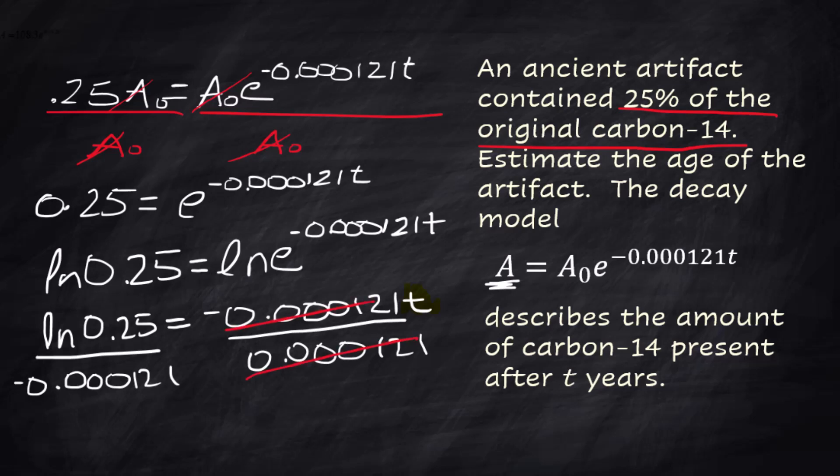And you're going to grab a calculator and you're going to punch in the natural log of 0.25 and you're going to divide it by that number. The solution was that t is 11,456.98. All right so this thing we found, you come up with a story, it's a little thing you found in your backyard but it's 11,457 years old. Cool huh?